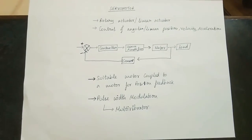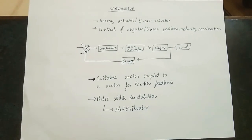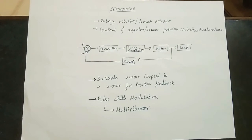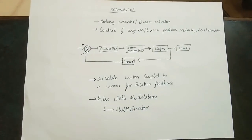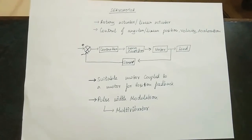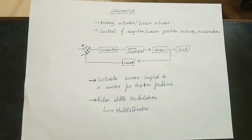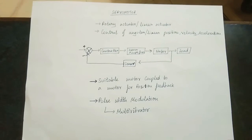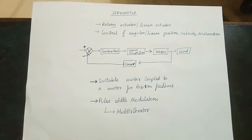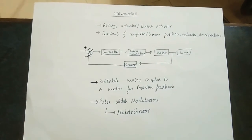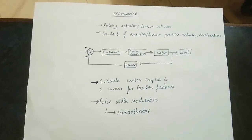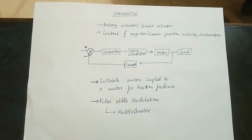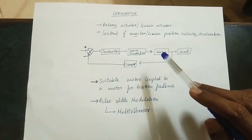This is the input of the sensor. All of this is the control system mechanism. The control system is based on the subject. I will tell you all about this — a suitable motor coupled to a motor for a positioning feedback.